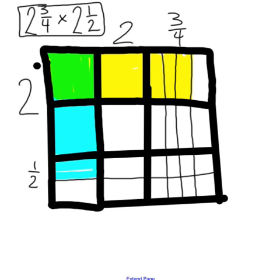The last step in the coloring portion is to look at the rows and the columns, and wherever they meet, color that area in as well. The overlapping areas are colored green, since the first box was also green — it's what two and three-fourths and two and one-half had in common. Following the first blue box and first yellow box all the way in, they meet at one box, which gets colored in.